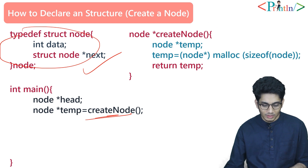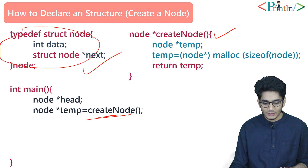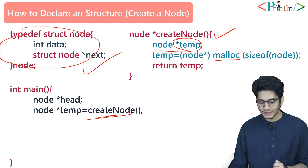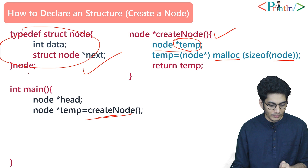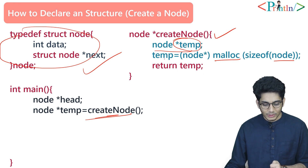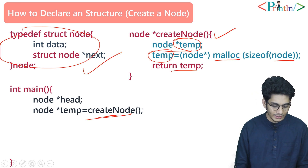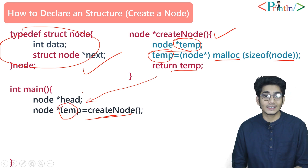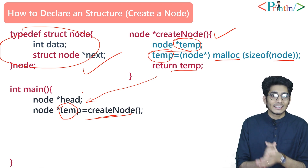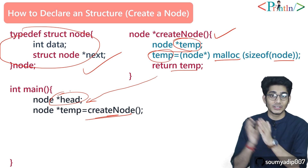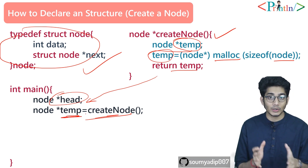Inside the function, we first create a pointer called temp. Then we allocate memory for it using malloc — 'malloc(sizeof(node))' — allocating memory for our node structure. After allocating the memory, it returns the address into temp and we return temp. So this allocated memory comes back to the caller. Note that temp is a physical node — it's an actual memory block — whereas head is just a pointer that stores the address of a node.